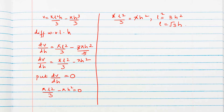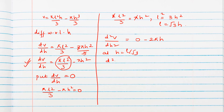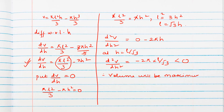Now we find the second order derivative. Differentiating dV/dh = πl²/3 − πh², the constant term vanishes, giving d²V/dh² = −2πh. At h = l/√3, d²V/dh² = −2πl/√3, which is negative. Therefore, the volume is maximum at l = √3 · h.